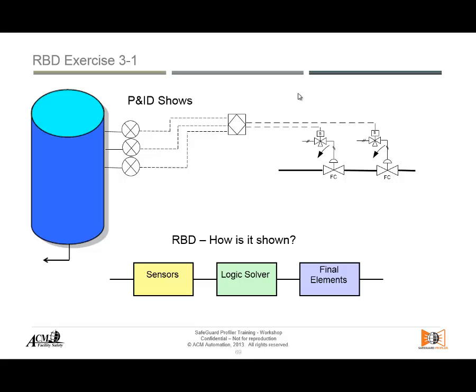What is the answer? For the three sensors, in reality we cannot tell whether it's one out of three or two out of three, so it is M out of three. For the logic solver it is one out of one. For the final elements we have the solenoid and the valve in series, so that combination will be two out of two.